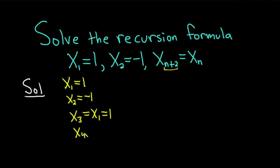Let's look at x sub 4. Again, we're forcing n plus 2 to be equal to 4. That means that n has to be 2. So this is going to be equal to x sub 2, which is equal to negative 1.